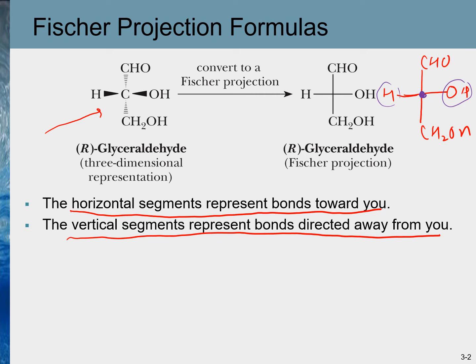Rotation of Fischer projections by 90 degrees is not permissible. If we rotate 90 degrees, the structure no longer means the same thing, because it will not maintain the condition of vertical bonds being away from you and horizontal bonds being towards you.